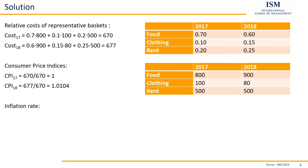We are only left with the inflation rate. The inflation rate is just the growth rate of either the consumer price indices or the cost of the representative basket of goods. Using the consumer prices, we take the new value 1.0104, minus the old value 1, divided by the old value 1. This gives us an inflation rate of 0.0104, or in other words, 1.04%.